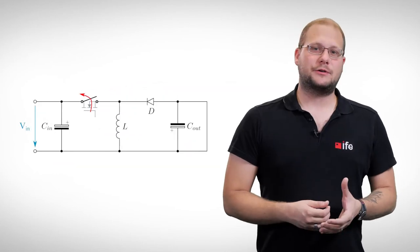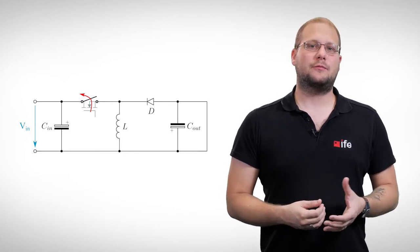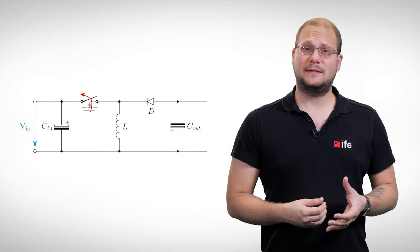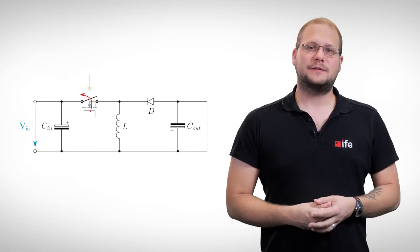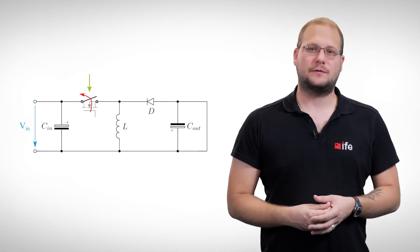With these considerations, we can derive a few characteristics for our converter. Short circuit protection, for example, can be easily done. The transistor is in the same place as in a step-down converter, so we can just switch off the transistor.